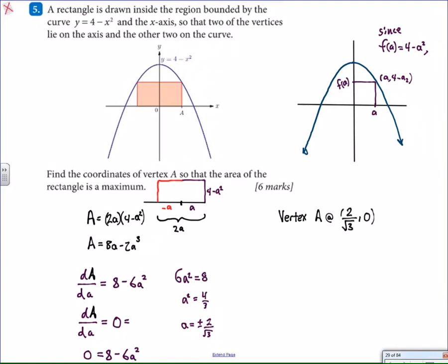If we put the vertex A at the point 2 over square root of 3, 0, that confirms that we are going to have the largest possible area at 6.16 approximately square units.